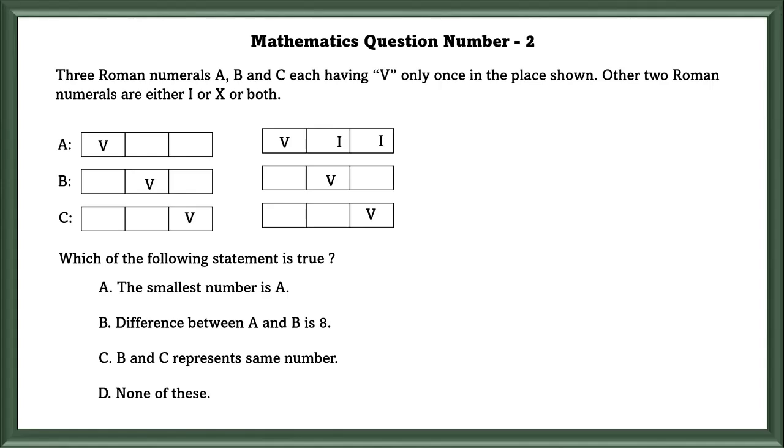VII is possible, that is equal to 7. XVI is also possible, that is 16. XIV is also possible, that is 14. So which of the following statements is true? A statement is true because the smallest number is A.